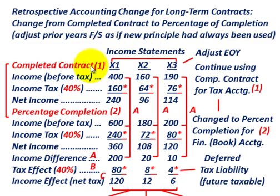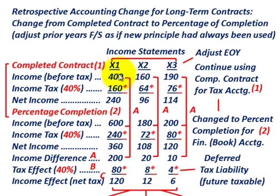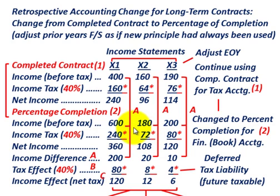We're looking at income statements for the completed contract versus the percentage of completion method across three years: X1, X2, and X3. We're making our adjustments as of the end of year X3. We're continuing to use the completed contract method for tax accounting purposes but changing to the percentage of completion method for financial or book accounting purposes. The numbers are laid out for income before taxes, income tax, and net income for both methods.